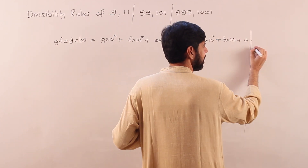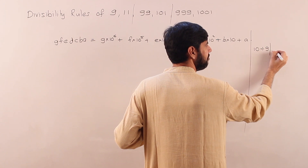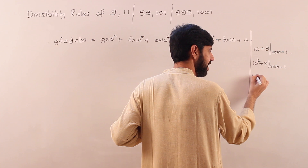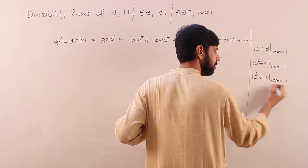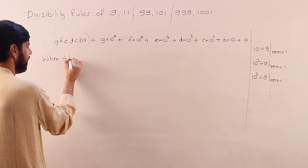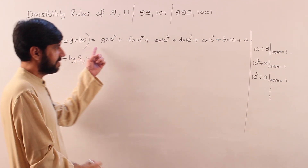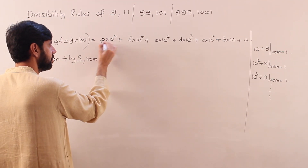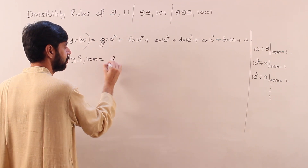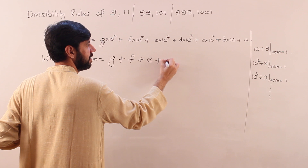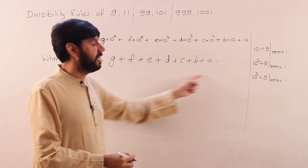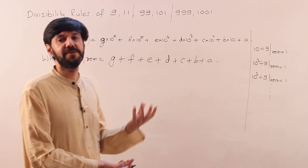I know that 10 divided by 9 gives a remainder of 1, and thus 10² divided by 9 also gives a remainder of 1, and 10³ also, and so on — all of them give remainder 1. So when this number is divided by 9, the remainder will be g + f + e + d + c + b + a — the sum of digits. If the sum of digits is divisible by 9, the remainder will be 0.